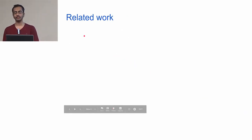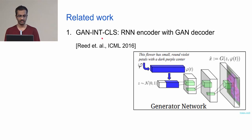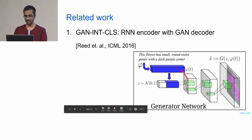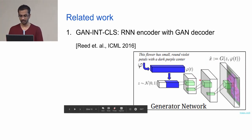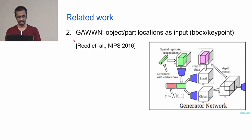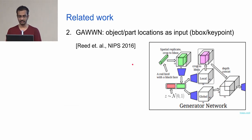We will now go through the related work to see how this line of research has progressed. The first paper in this line of work was done by Scott Reed et al., published in ICML 2016. They have an RNN encoder which they concatenate with the noise vector and pass it on to the generator — a normal generative adversarial setting. The next work by the same group added bounding box and key point information to tell the network where the actual object is located, giving the generator more information.